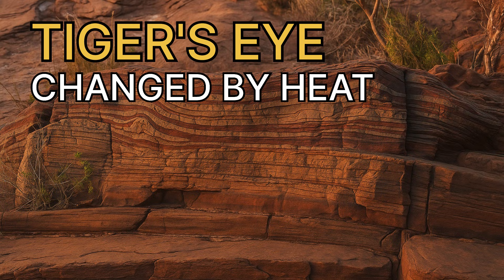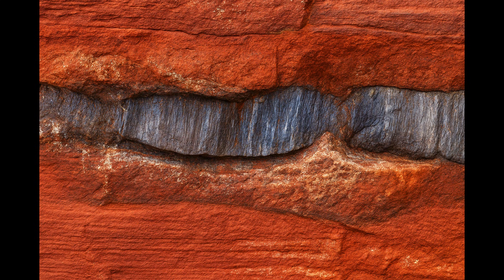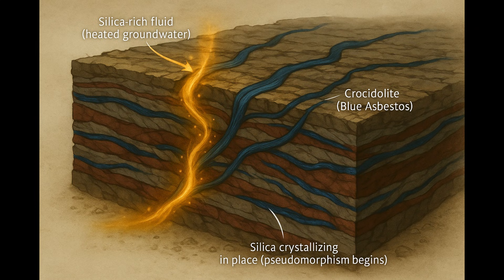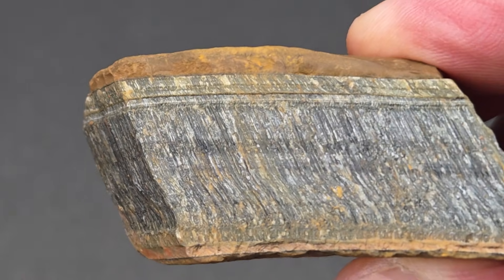One rock in this lineup undergoes a transformation unlike any other. Tiger's eye begins as blue crocidolite, a fibrous mineral found within seams of ancient banded iron formations — rocks made of hematite and chert more than two billion years old. Later, hot hydrothermal fluids moved through the rock, dissolving the crocidolite and replacing each fiber with quartz one crystal at a time. This transformation is called pseudomorphism: the texture stays, but the mineral changes. The first result is hawk's eye, a blue fibrous quartz with the original structure preserved.